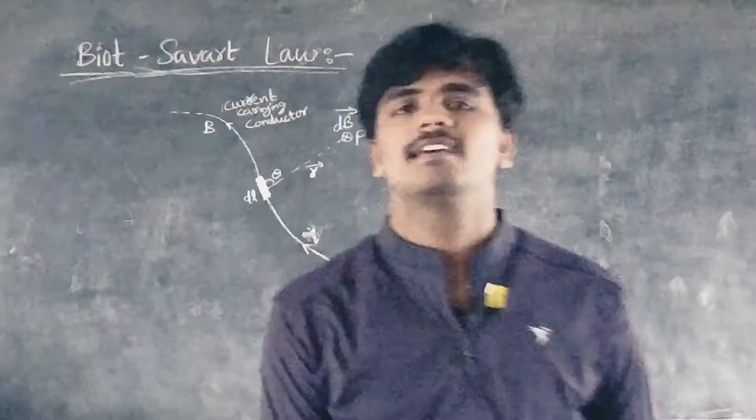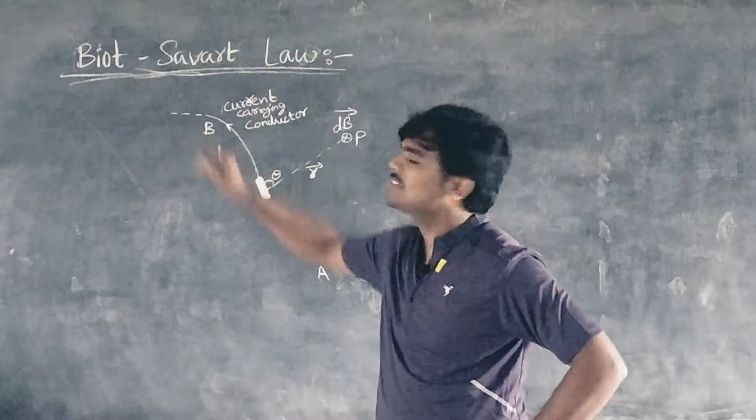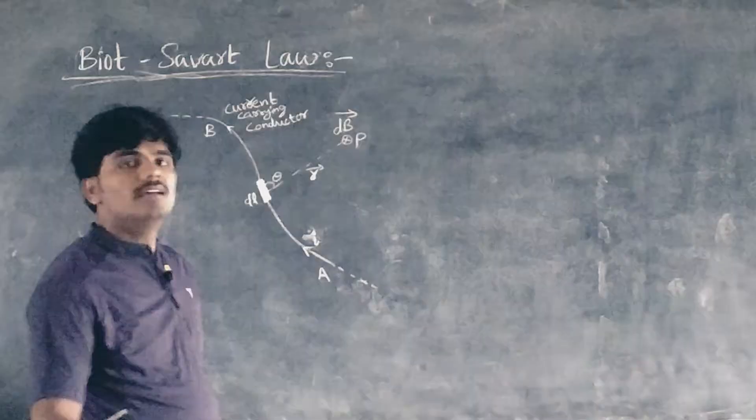As shown in the figure, let AB be a conductor of any arbitrary shape in which current I is passing through it. Let P be a point at which magnetic field is to be determined.